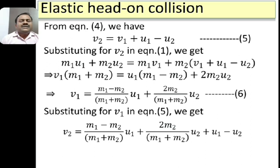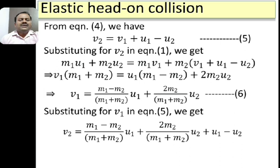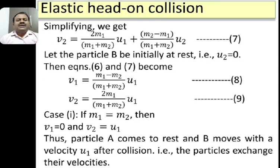Cross-multiplying by (M1 + M2), we get V1 = [(M1 − M2)/(M1 + M2)]·U1 + [2M2/(M1 + M2)]·U2. This is equation 6. Substituting V1 back to find V2, and simplifying by collecting U1 and U2 terms, we get V2 = [2M1/(M1 + M2)]·U1 + [(M2 − M1)/(M1 + M2)]·U2. Let this be equation 7.